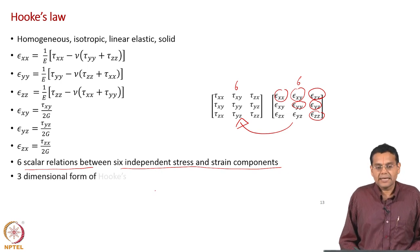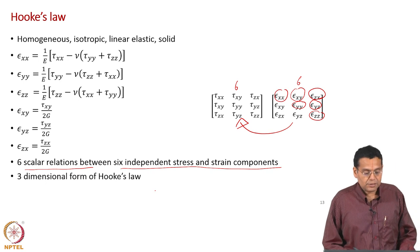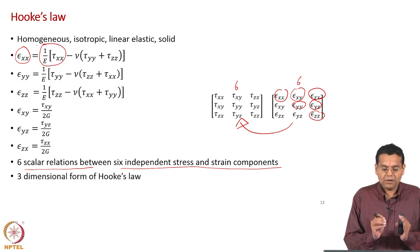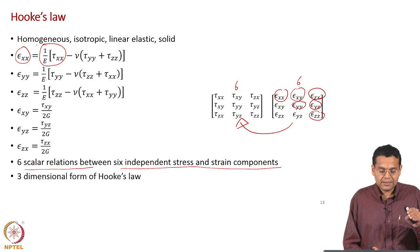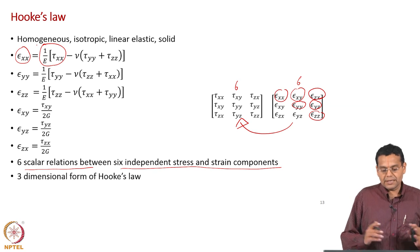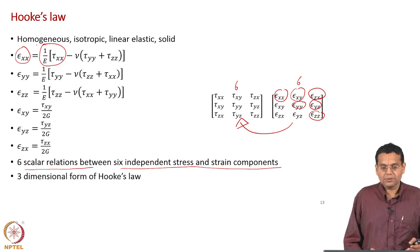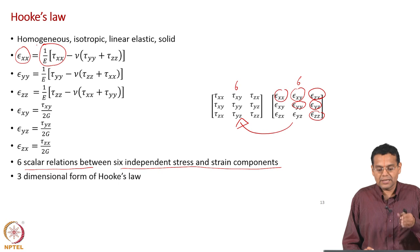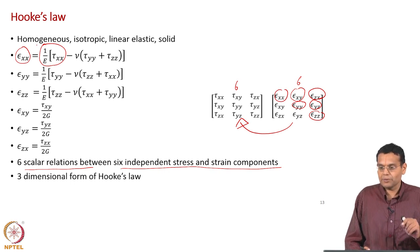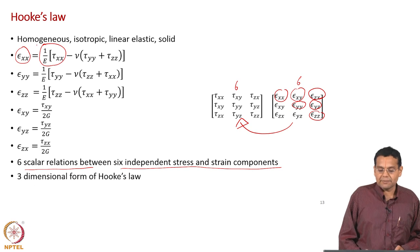The stress tensor has nine components but only six are independent. Similarly the strain tensor has nine components but only six are independent, since epsilon_xy = epsilon_yx. So there are six scalar relations between the six independent stress and strain components — this is the three-dimensional form of Hooke's law. The familiar simplified form is epsilon_xx = tau_xx / E; what we have derived is a more general, three-dimensional version, still under the assumptions of homogeneous, isotropic, linear elastic material.